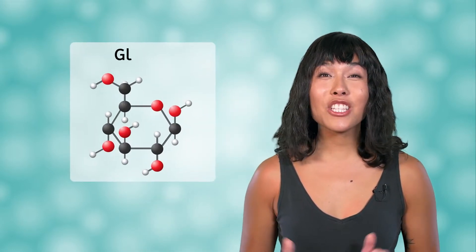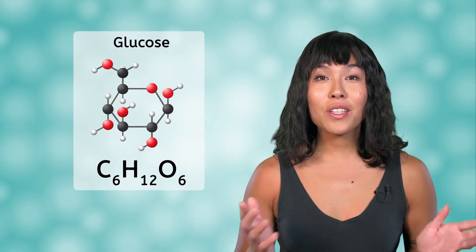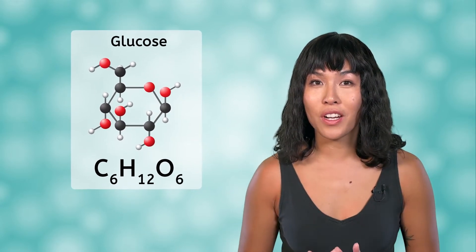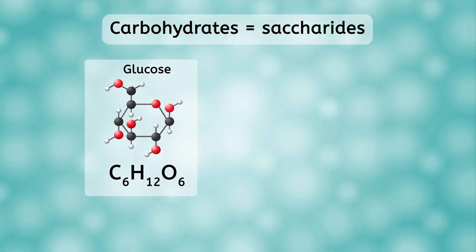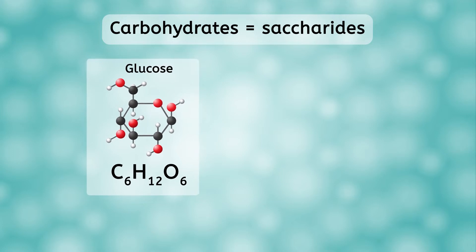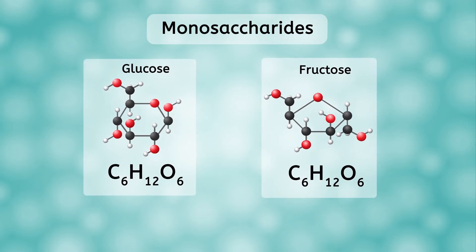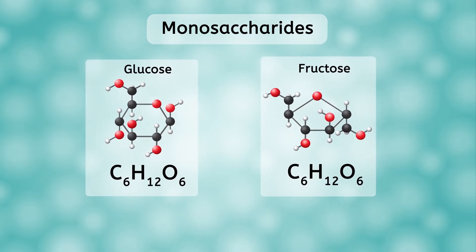Carbohydrates are macromolecules consisting specifically of carbon, hydrogen, and oxygen atoms. This is glucose, a carbohydrate with the chemical formula C6H12O6. Notice the black carbons, white hydrogens, and red oxygens — carbon forms most of the central ring structure. Carbohydrates are also known as saccharides. Glucose is a monosaccharide because it consists of one saccharide unit. Another monosaccharide is fructose. Notice how similar these two monosaccharides are — they even have the same chemical formula; the atoms are just arranged a little differently.